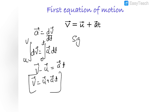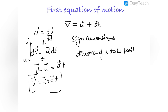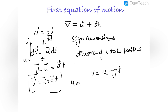Sign conventions are very important. We assume the direction of the initial velocity u to be positive, and the opposite direction of u is negative. For example, if a stone is thrown upward, we assume u positive and the upward direction positive, so we write v = u - gt, since g acts in the downward direction.